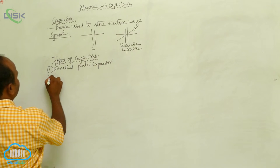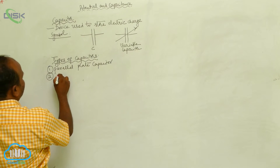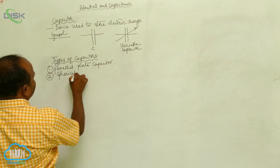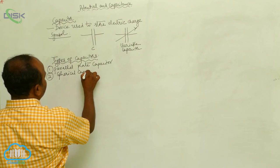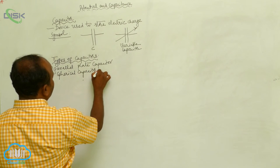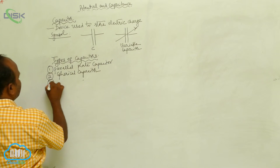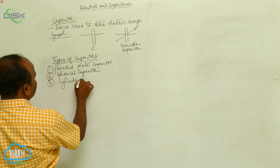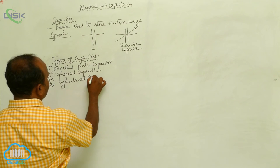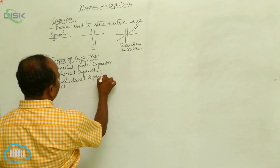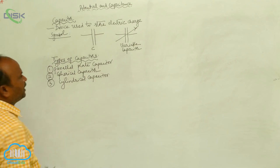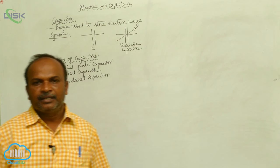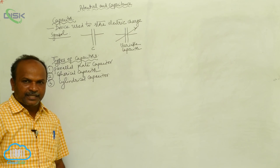Second one is the spherical capacitor. And the third is the cylindrical capacitor. So there are three types of capacitors: parallel plate capacitor, spherical capacitor, and cylindrical capacitor.